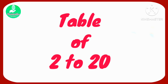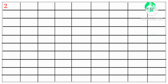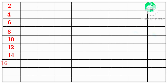Table of 2 to 20. 2 1s are 2, 2 2s are 4, 2 3s are 6, 2 4s are 8, 2 5s are 10, 2 6s are 12, 2 7s are 14, 2 8s are 16, 2 9s are 18.